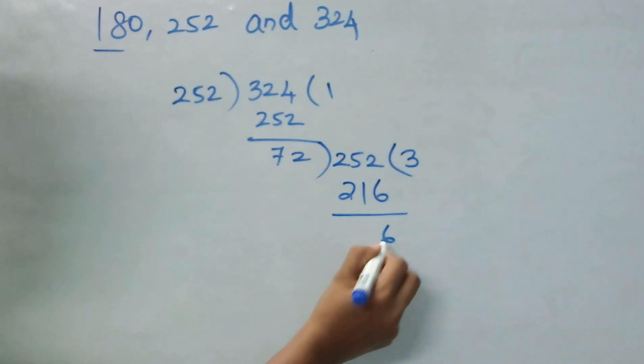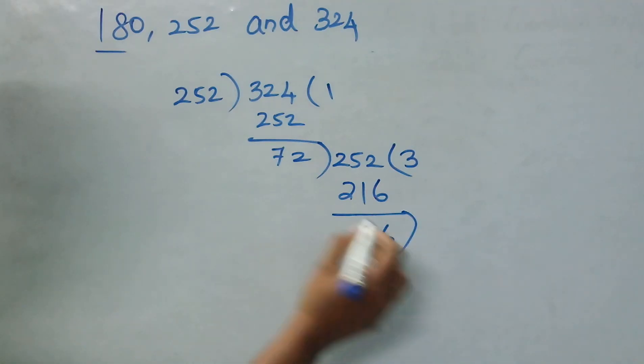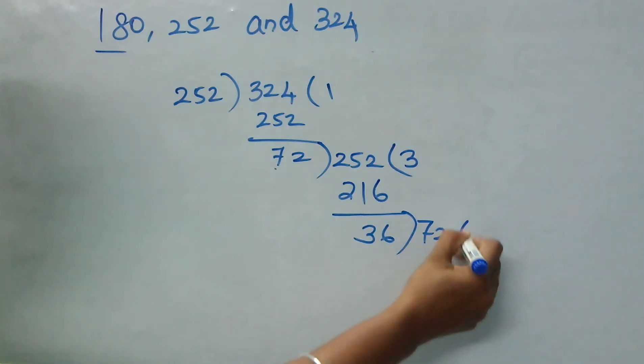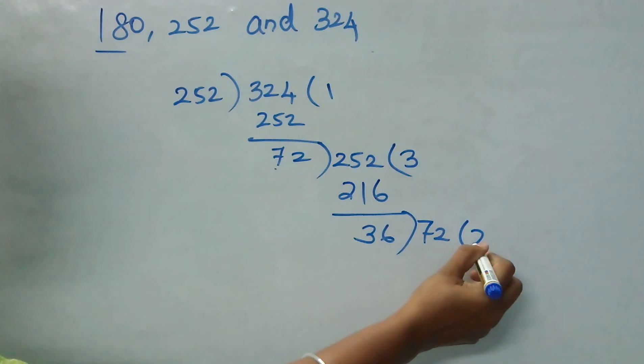Now, 12 minus 6 is 6, 4 minus 1 is 3. Here again, bring this 72 here. Just divide this. 2 times 36 is 72.